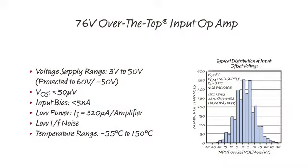The LT6016 is a dual amplifier with a supply range that spans 3 volts to 50 volts. It features less than 50 microvolts of offset voltage, under 5 nanoamps of input bias current and runs off 320 microamps per amplifier, has low 1 over F noise and is housed in a small 8 pin MSOP package which is specified for minus 55 degrees C to 150 degrees C.